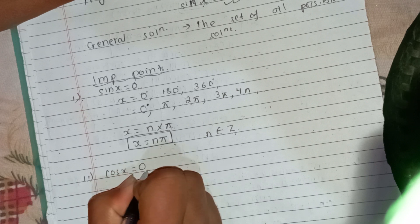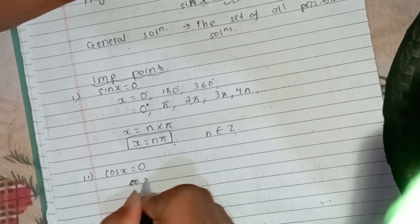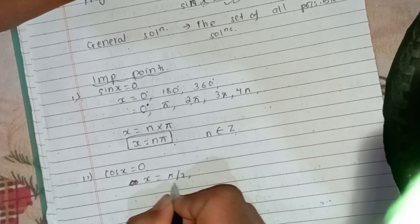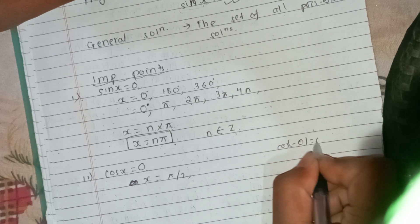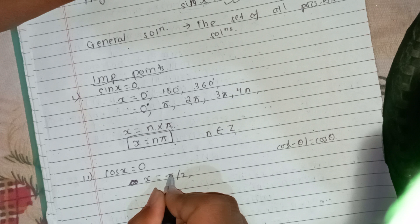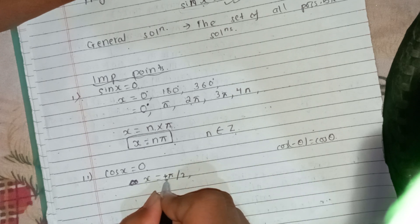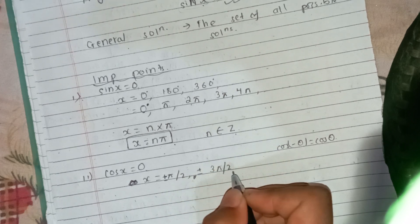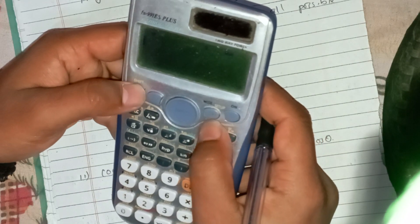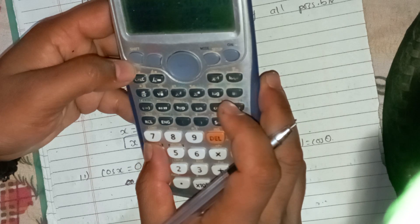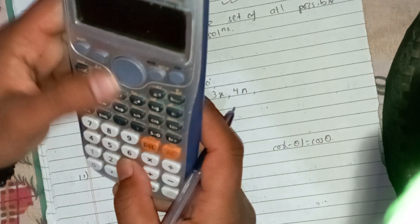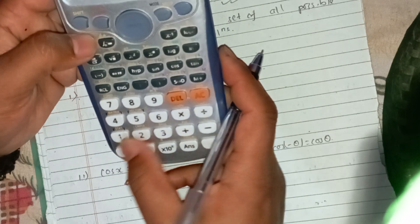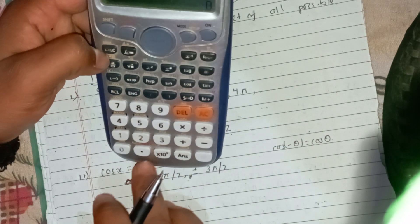For cos x equals 0: cos 90° is 0, which is π/2. Since cos(−θ) equals cos θ, cos(−90°) is also 0. We will verify this in radian mode using the calculator. cos(π/2) gives us 0.